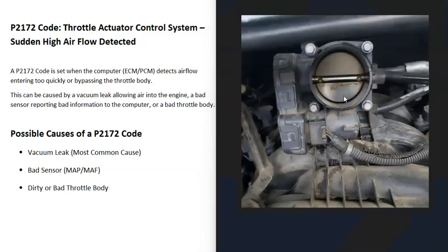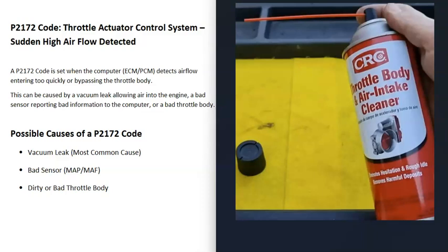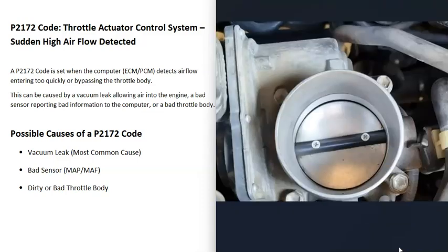If you've checked the other causes and found no issues, go inspect the throttle body to make sure there are no problems with it. If it looks really dirty with a lot of buildup, it's a good idea to clean it, since a dirty throttle body can cause many issues. You can use throttle body air intake cleaner — just spray inside thoroughly, use a small toothbrush and a rag to clean it up. Note that when you first start the vehicle after cleaning, the engine will run badly for about 30 seconds to a minute until the cleaner burns off, but then it should run better.